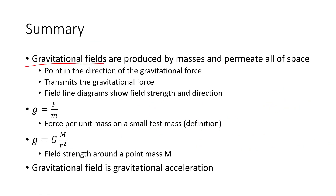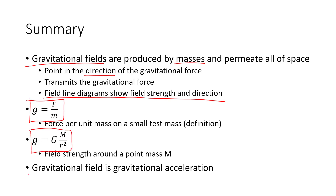In summary: gravitational fields are produced by masses and permeate all of space. They tell us about the gravitational force — both its direction and magnitude. Field line diagrams show us the field strength and direction. The definition of gravitational field strength is force per unit mass on a small test mass. We can also find the field strength produced by a mass big M using little g equals G·M over r². And that gravitational field strength equals the gravitational acceleration at that location.